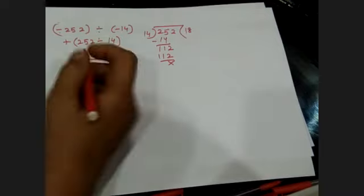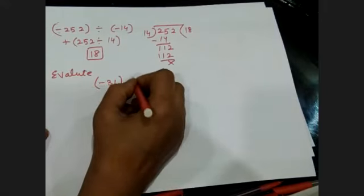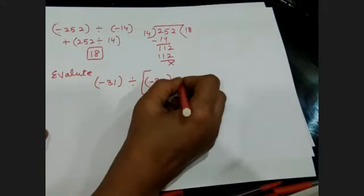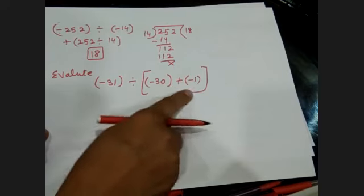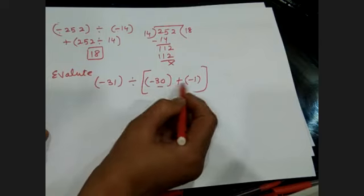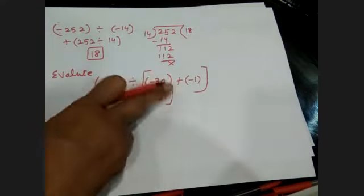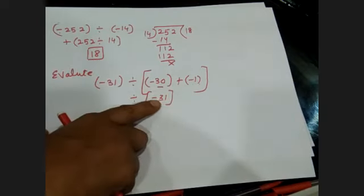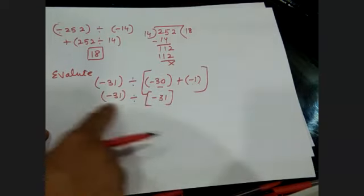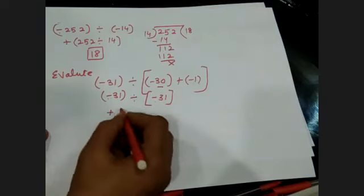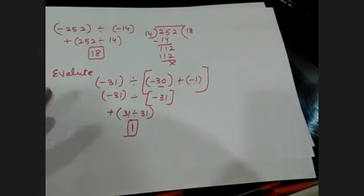For bracket-type questions like: minus 31 divided by [minus 30 plus minus 1]. First solve inside the bracket: minus 30 plus minus 1 equals minus 30 minus 1 equals minus 31. Now divide: minus 31 divided by minus 31 — minus divided by minus is positive, and 31 divided by 31 equals 1. The answer is 1.